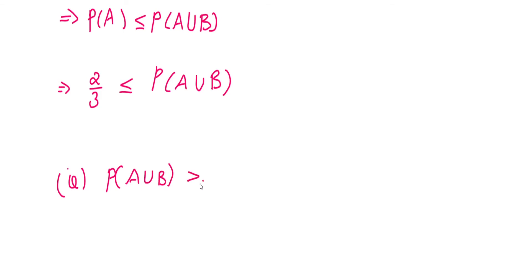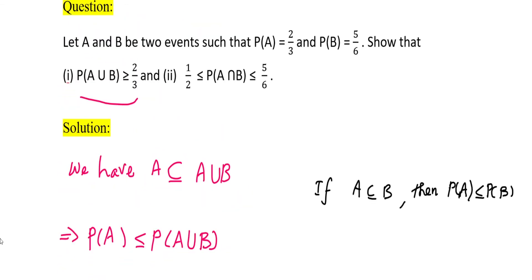Now we are going to do the second part of the proof: 1/2 ≤ P(A∩B) ≤ 5/6. Note that 5/6 is the value of P(B).